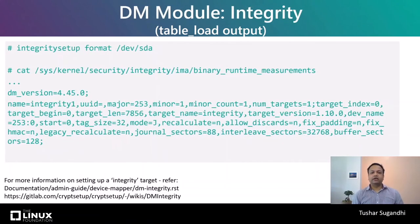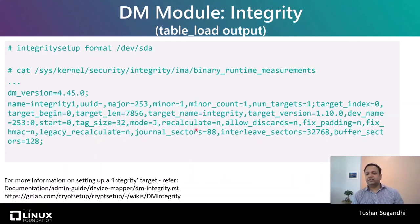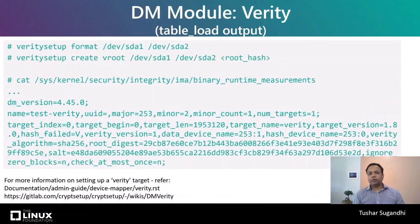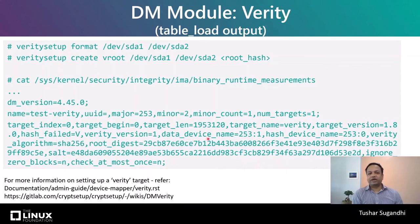For the Integrity module, we measure attributes like the mode of writing integrity tags — whether it's direct write, journal write, bitmap mode, or without synchronization/recovery mode. We also log the fixed HMAC, which improves security of the internal hash and journal MAC because the section number is mixed into the MAC, preventing an attacker from copying sectors from one journal section to another. For the Verity target, which provides transparent integrity checking of block devices using cryptographic digests from the kernel crypto API, we measure the data device, the hash device, the hashing algorithm, and most importantly, the root digest — the hexadecimal encoding of the cryptographic hash of the root hash block. This hash should be trusted as there is no other authenticity beyond this point.